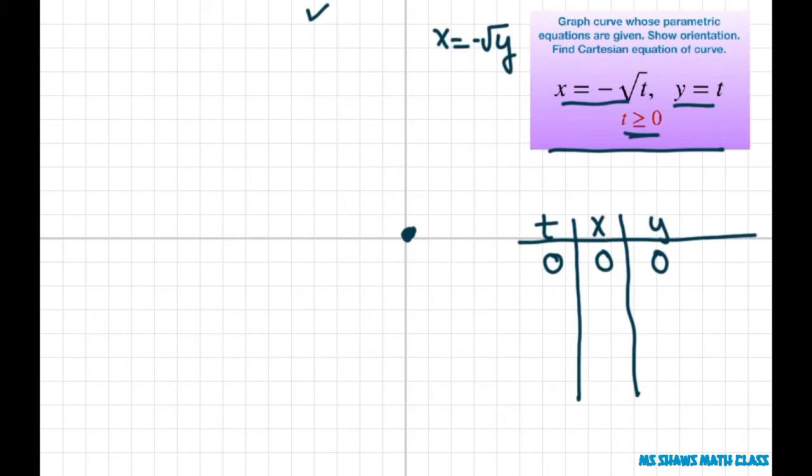Now, since we have this square root of t, let's choose four. So when t is four, then you substitute four, you're going to get negative two for your x and your y is going to be four. So we have negative two and we're going to one, two, three, four. So there's that.